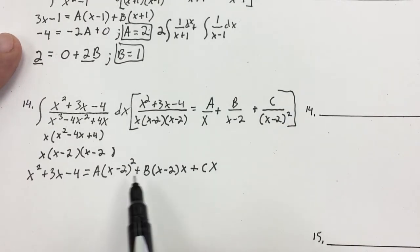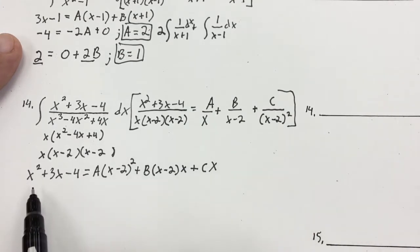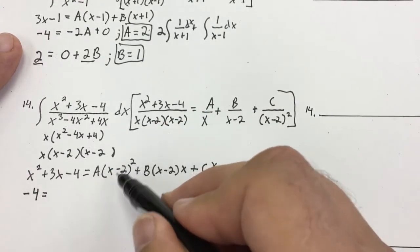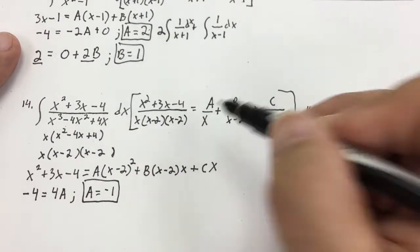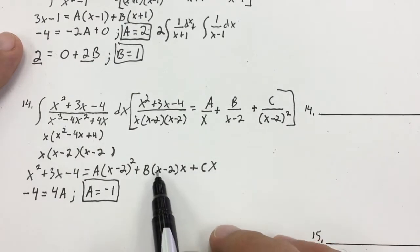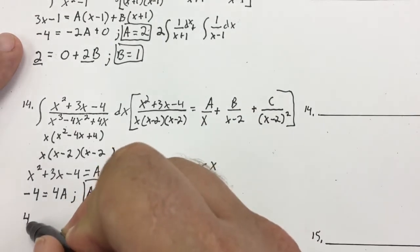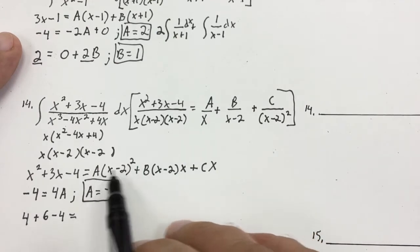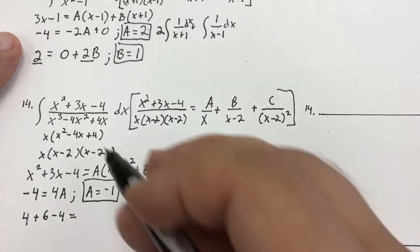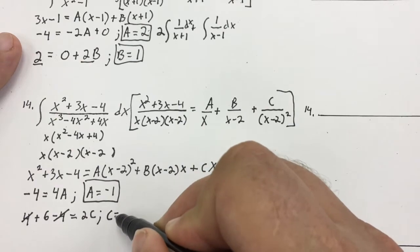Using the same method, I want to find A, so I'll let x equal 0. That gives me 0 + 0 − 4 equals A times (−2)², so −4 = 4A, meaning A equals negative 1. Now I let x equal 2 to find C. That gives me 4 + 6 − 4 = 6, and the A and B terms go to zero, leaving 6 = 2C, so C equals 3.